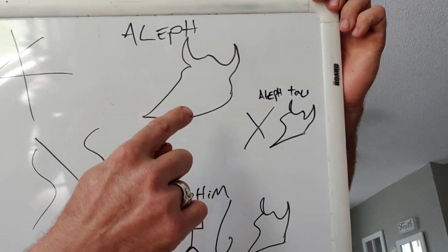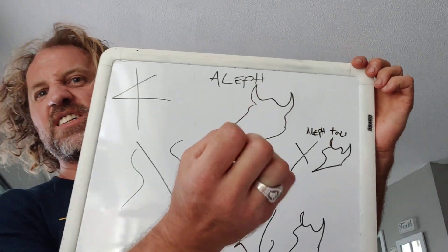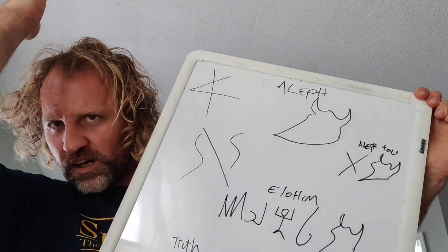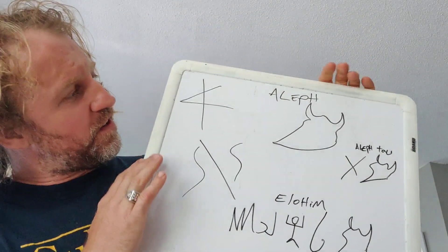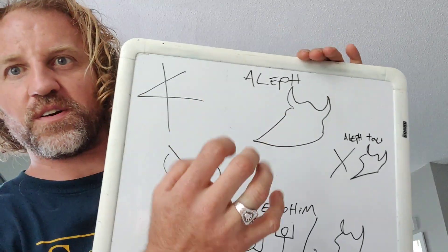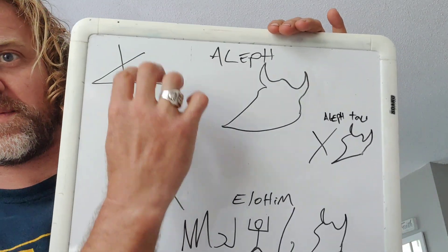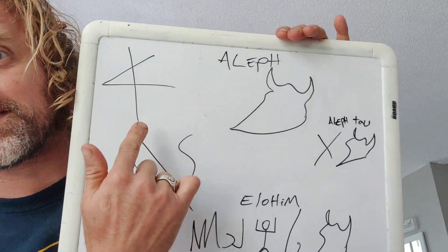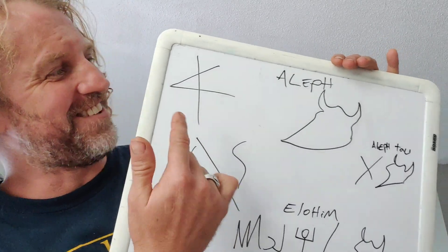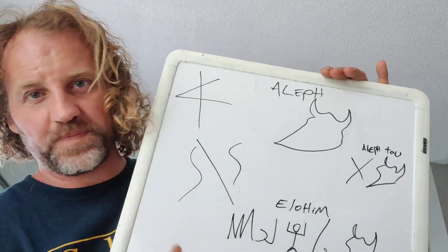So this is Aleph, which is an ox. It depicts strength and power. It depicts our Yahuwah — the Father. This is a sideways letter A, and that's where we get our letter A from.